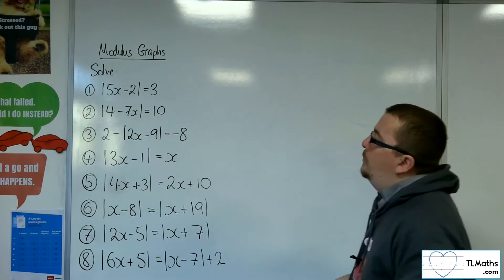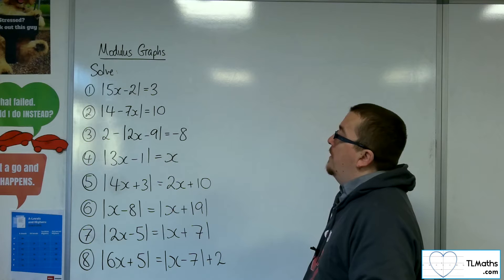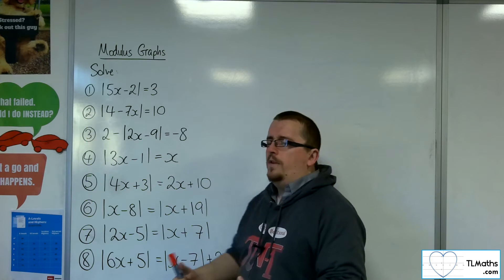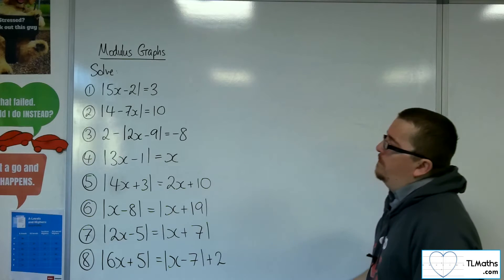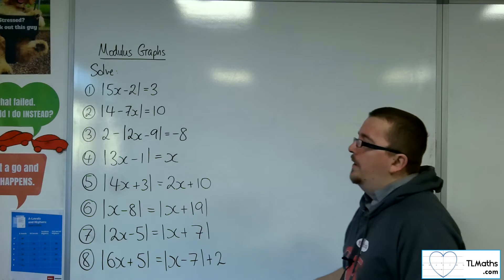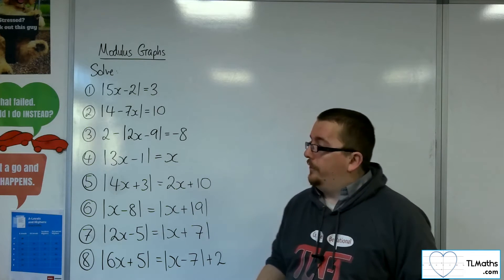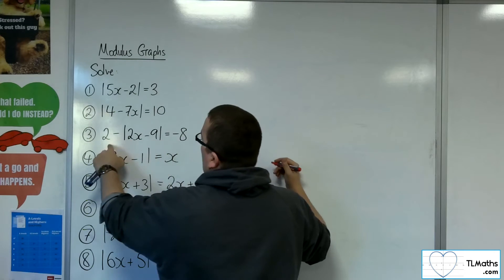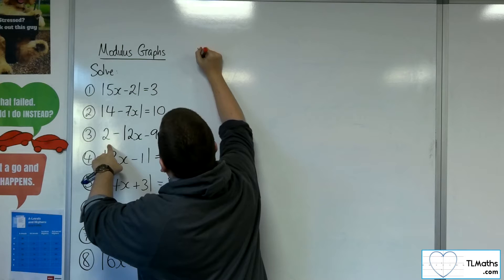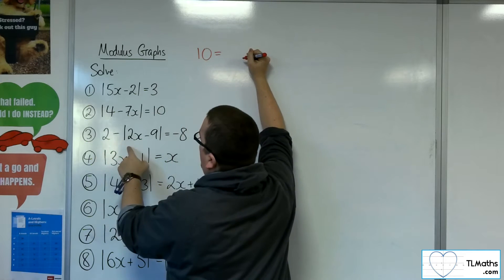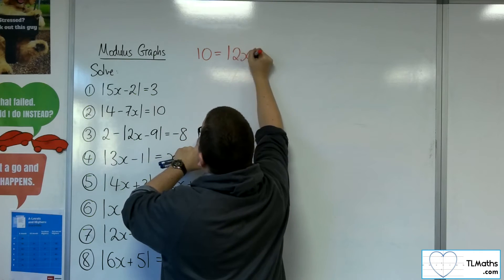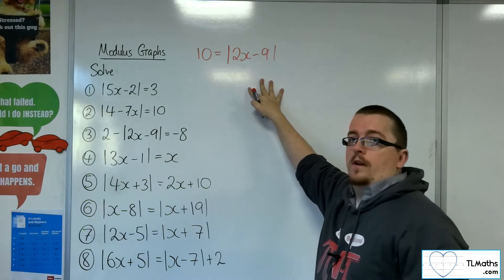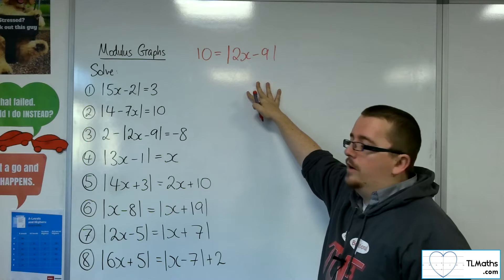Number 3: 2 take away mod of 2x minus 9 is equal to minus 8. It looks more difficult than it actually is — I'd rearrange it first. Adding 8 to both sides and then moving the modulus over to the other side reduces it to a simpler equation, which is easier to think about and work with.